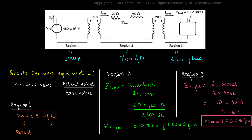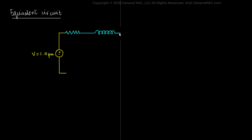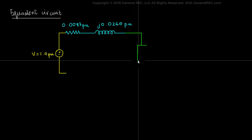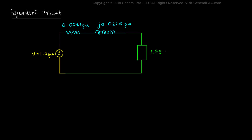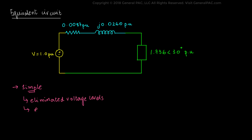Since we now have the per unit values, we will draw the equivalent circuit, which is very simple. It has a voltage source of 1 per unit, a resistive component of 0.0087 per unit and reactive component of j0.0260 per unit, and a load of 1.736 at 30 degrees per unit. As you can see, the per unit equivalent circuit is simpler because we have eliminated the different voltage levels completely, thereby eliminating the Region 1, Region 2, and Region 3 boundaries. This simplification is one of the biggest reasons why we use per unit systems in power systems.